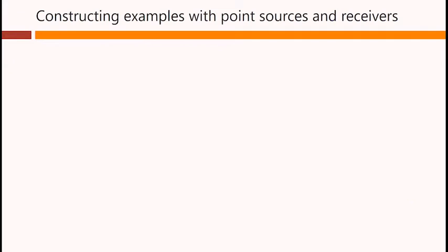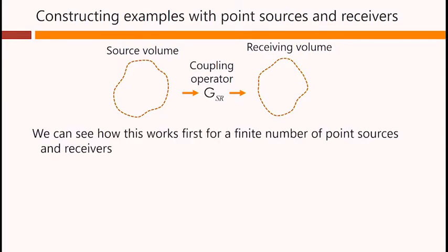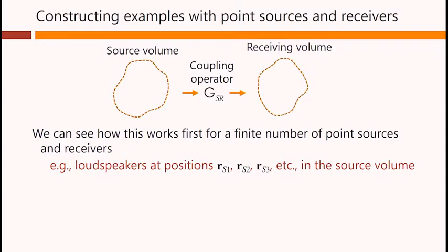All of this may be simpler to understand if we construct some simple examples. So we imagine we have our source volume, our coupling operator and our receiving volume, and we can see how this works first for a finite number of point sources and receivers.